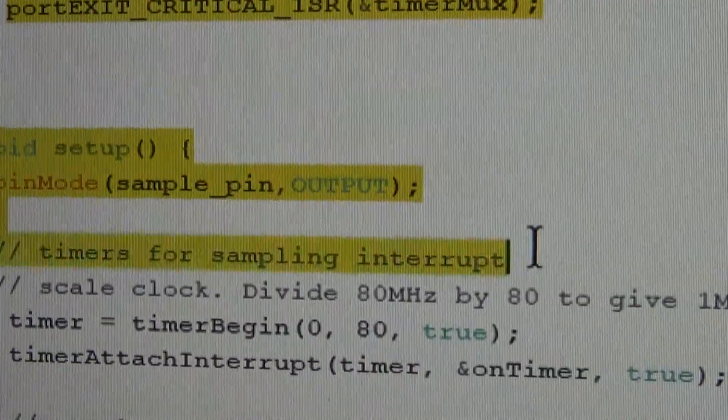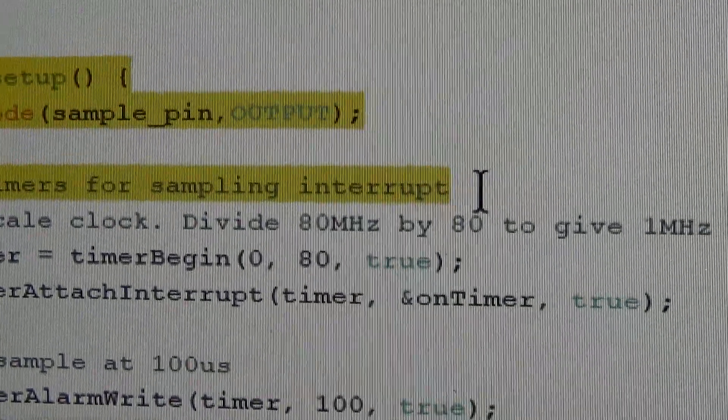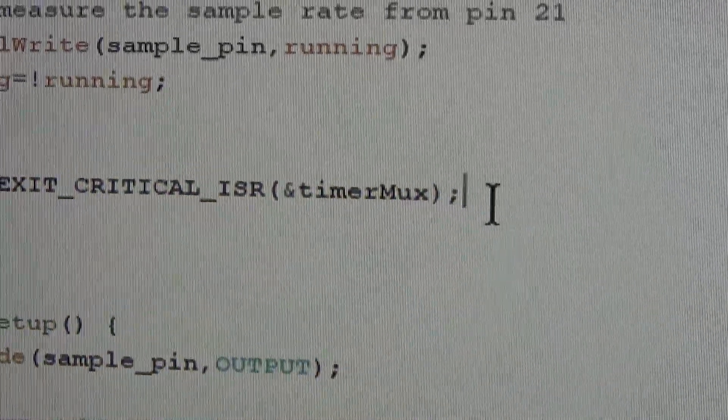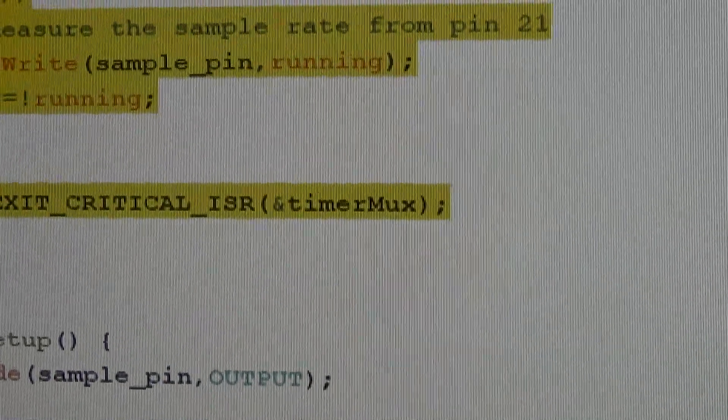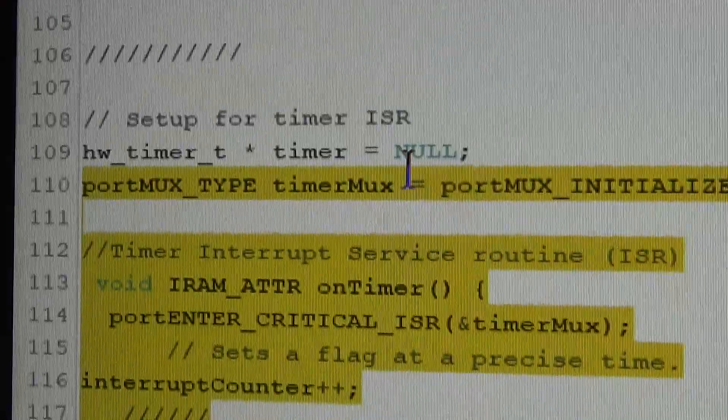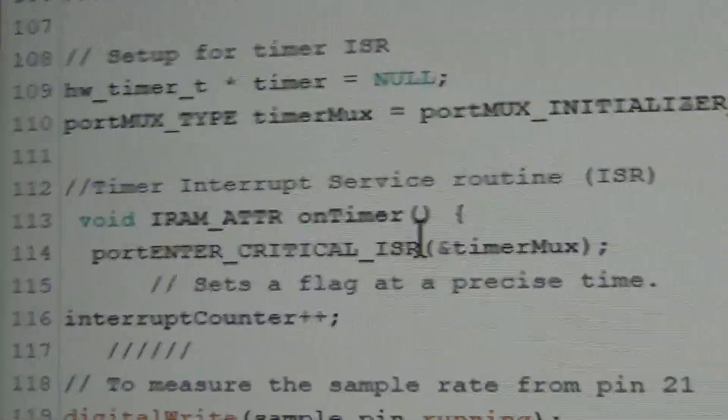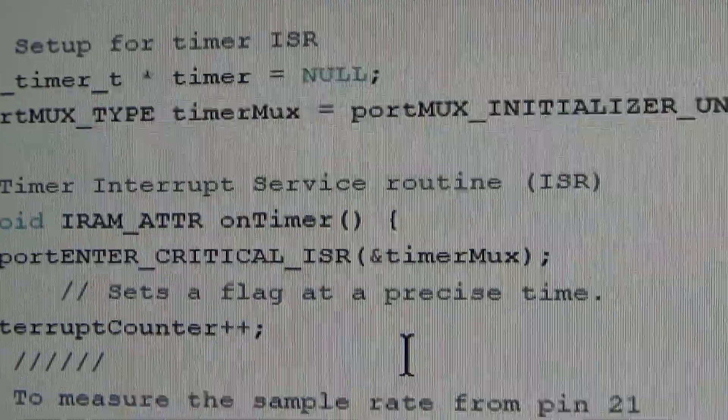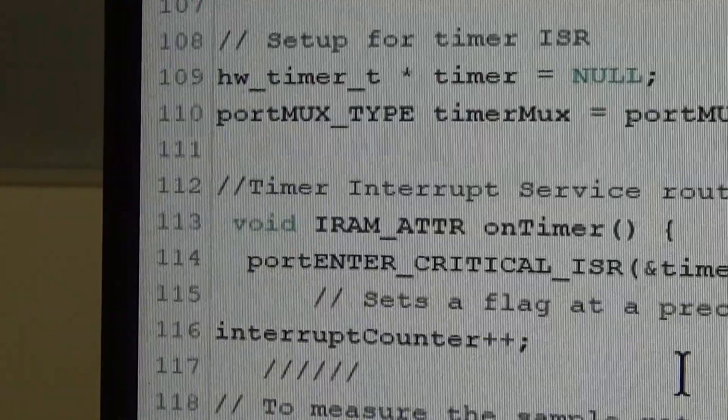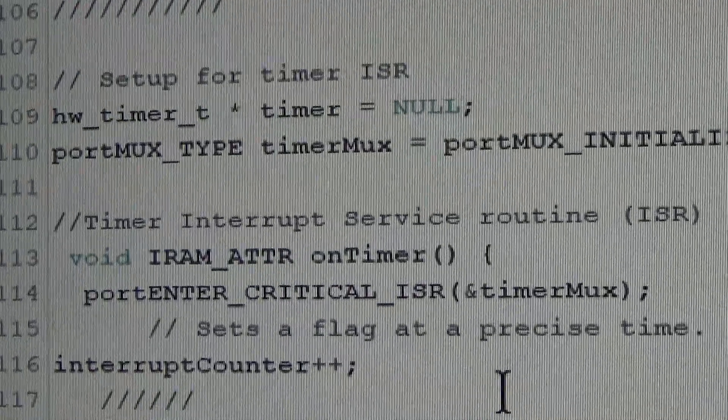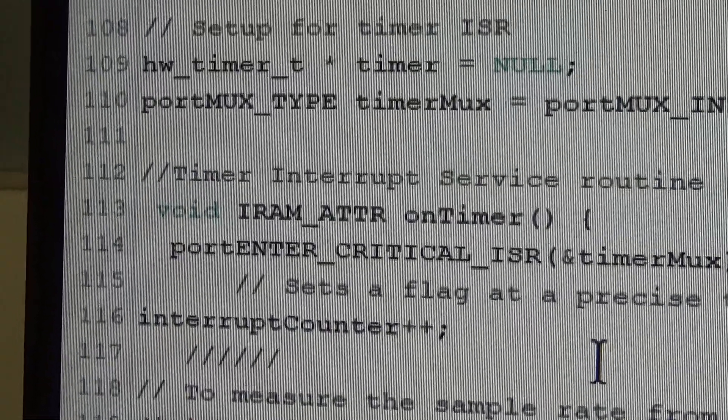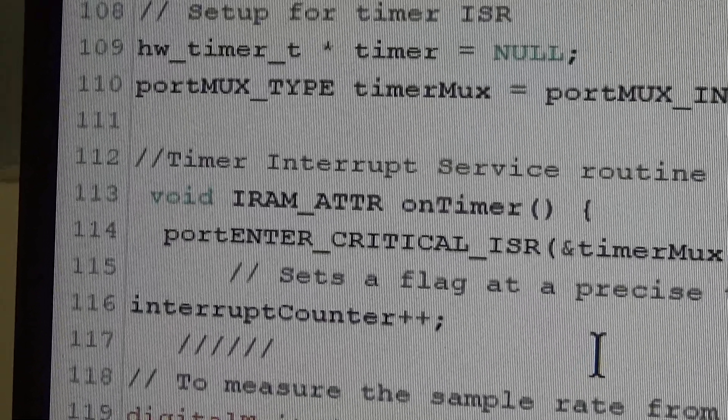This is the bit that does the timer interrupts, port critical ISRs, interrupt service routine. Oh, that's the end of it, sorry. There's the beginning here. That's the timer part at the top. And I've set it up so that it runs, as I say, around the loop at 10kHz.